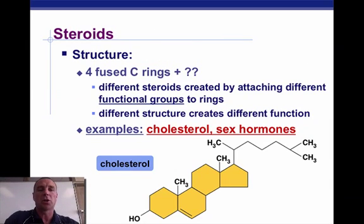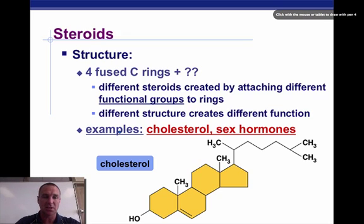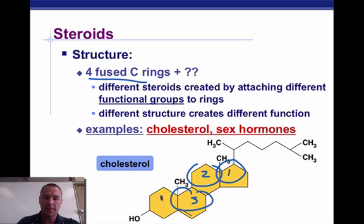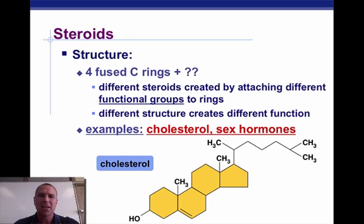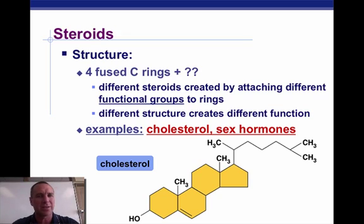The next group are steroids. Steroids consist of four fused carbon rings — you can count one, two, three, four — and then something attached to that structure makes it a specific steroid. Cholesterol is one such steroid, and it's found in our plasma membranes. It gives the membrane its rigidity or fluidity depending on how much or how little you have. That's why a high cholesterol diet can actually change the structure of your plasma membranes of your red blood cells, causing them to become less fluid. Steroids are also found in our sex hormones — just by changing what is attached to those four carbon rings determines what the steroid is.